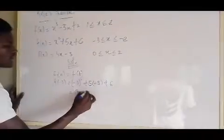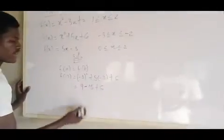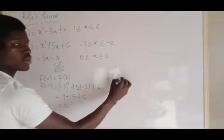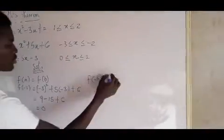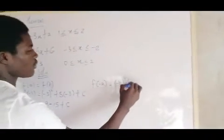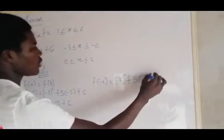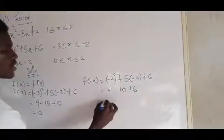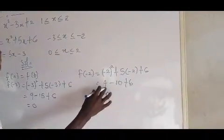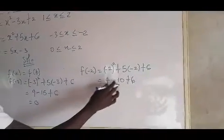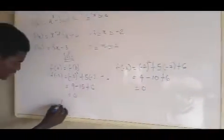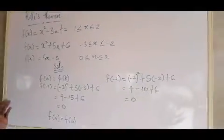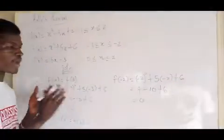Now f(b) = f(−2): (−2)² + 5(−2) + 6 = 4 − 10 + 6 = 0. Since f(a) = f(b) = 0, this function satisfies Rolle's Theorem. We can now check for the point.